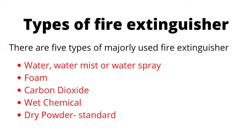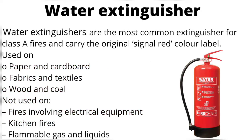There are five main types of fire extinguishers: water extinguisher, foam extinguisher, carbon dioxide extinguisher, wet chemical, and dry powder extinguisher. Water extinguishers are the most common extinguisher for Class A fires and carry a red color label.